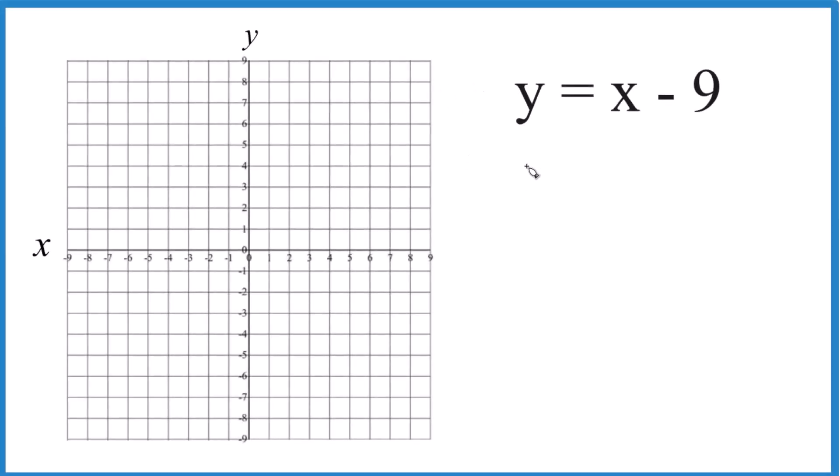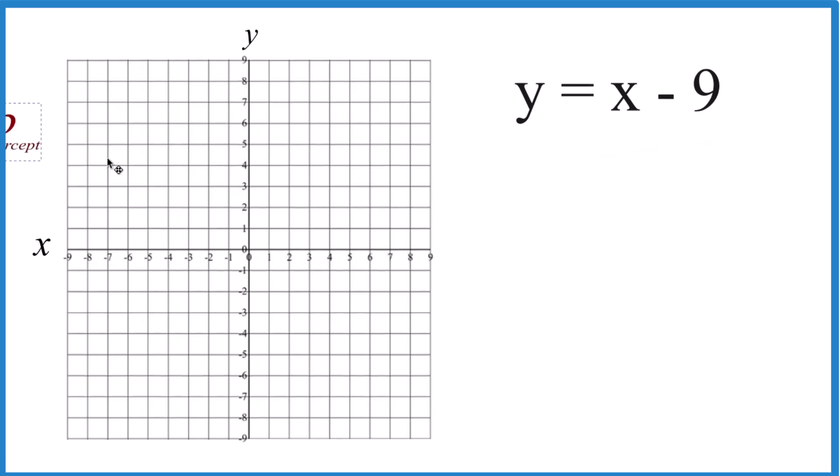Let's graph the linear equation y equals x minus 9. We're going to use slope-intercept form to do this. You can use a table of values, that'll work fine and you'll get the same graph, but this is maybe a little bit easier for this one.